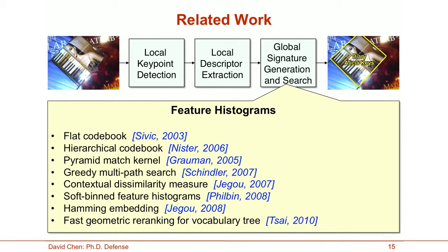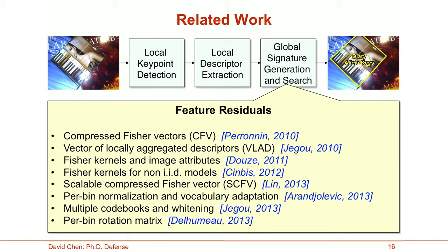For fast database search, the local descriptors are usually aggregated into a global signature. A large class of algorithms belongs to feature histograms, with methods proposed for both flat codebooks and hierarchical codebooks. Researchers have also developed extensions for improving performance, such as multipath search, contextual dissimilarity measure, soft binning, HEMI embedding, and fast geometric re-ranking. Another class of algorithms belongs to feature residuals, with well-known global signatures including the CFE, the VLAD, and the SCFV global signatures, as well as their variants.